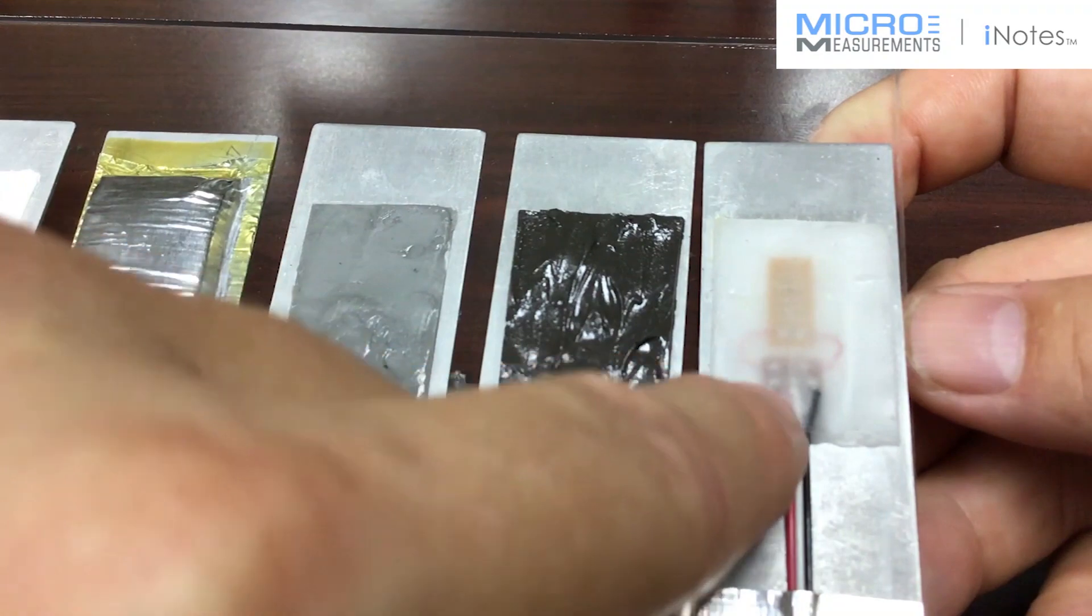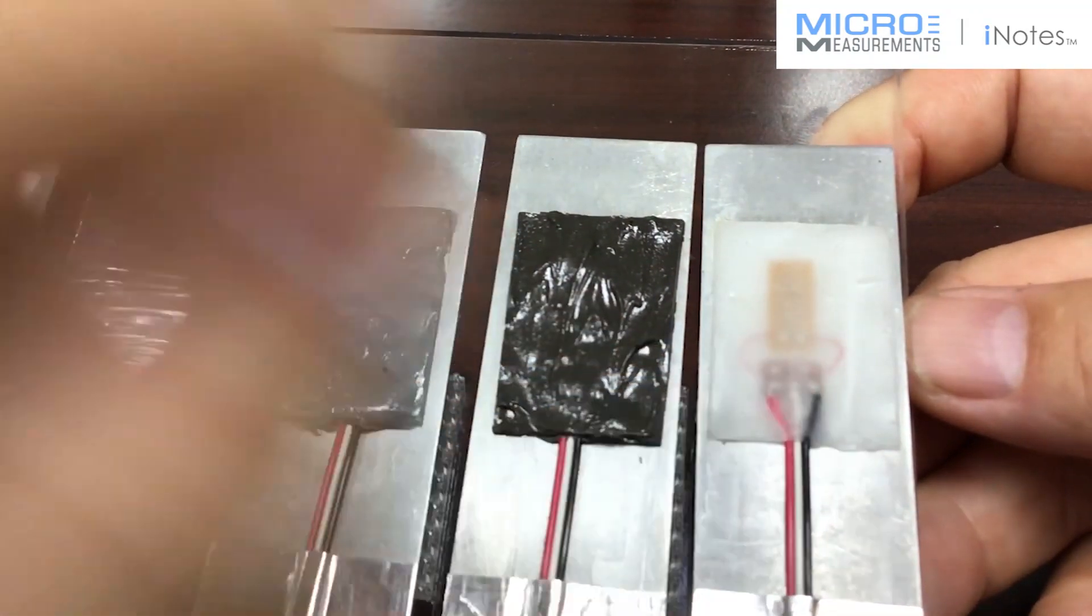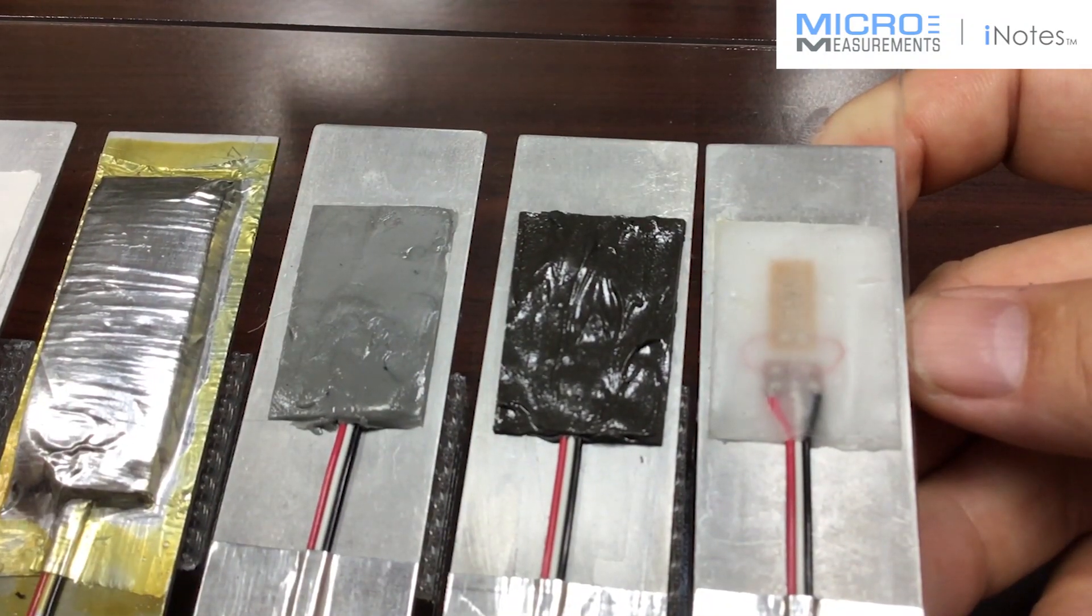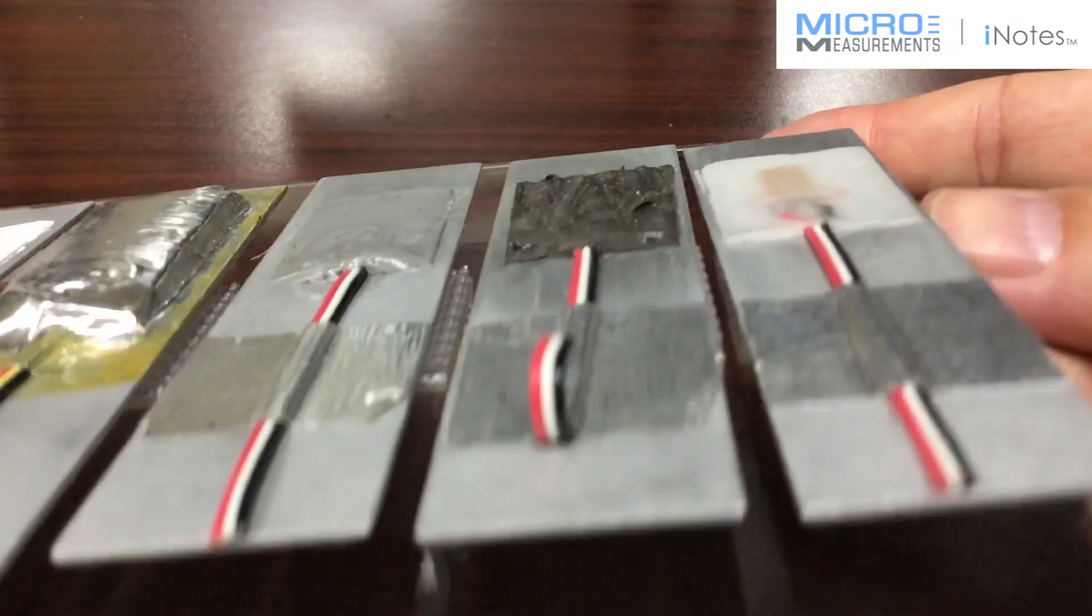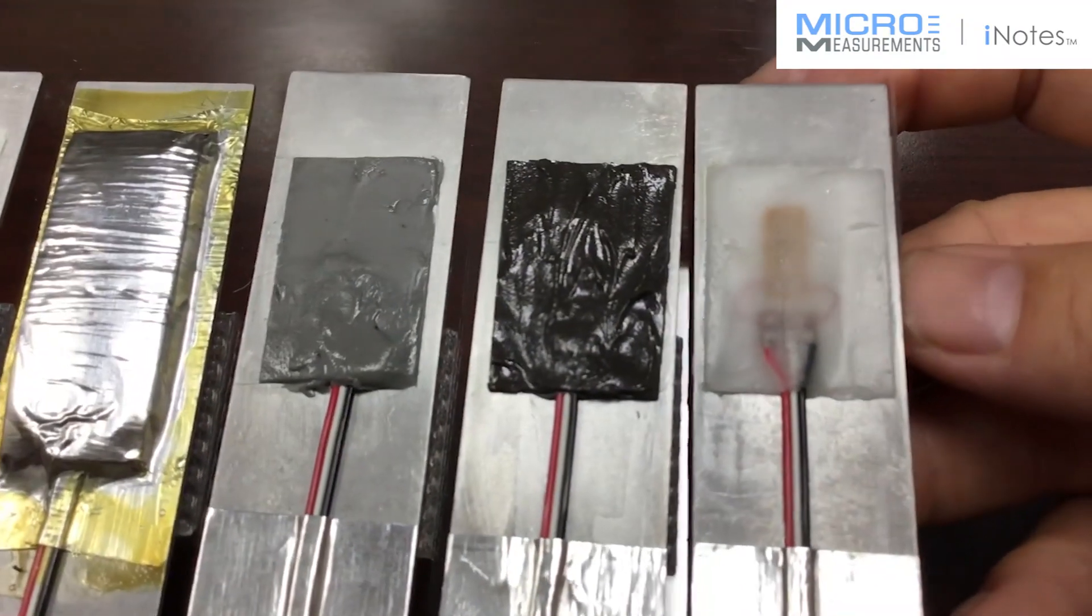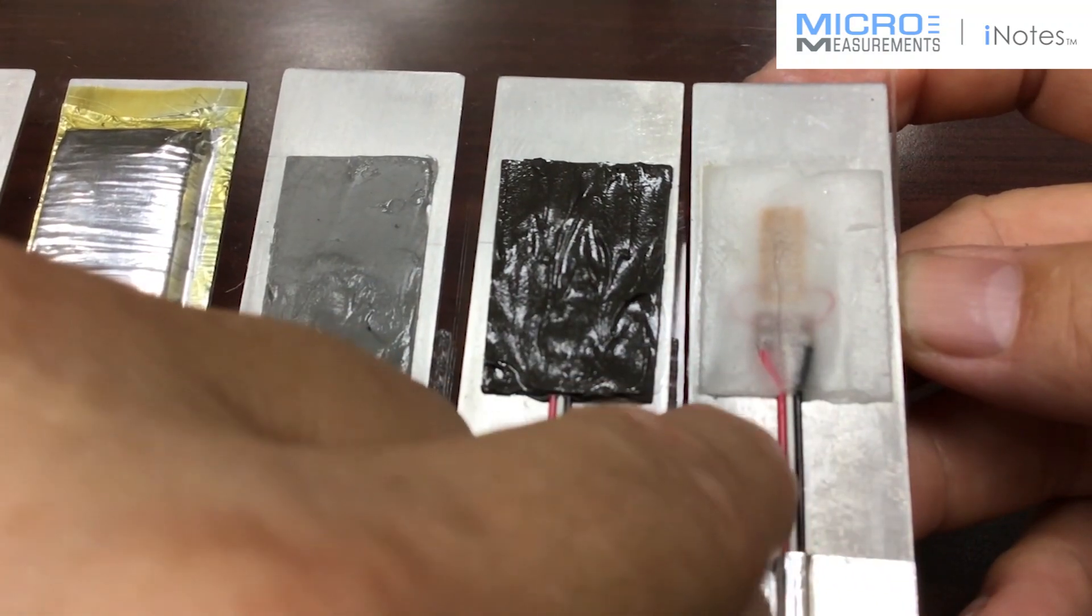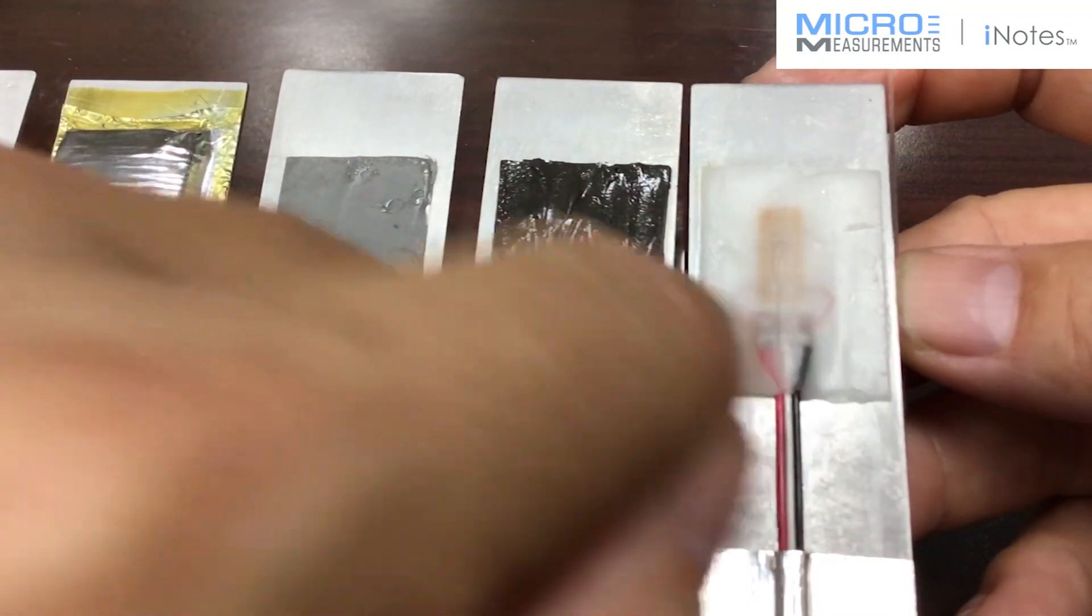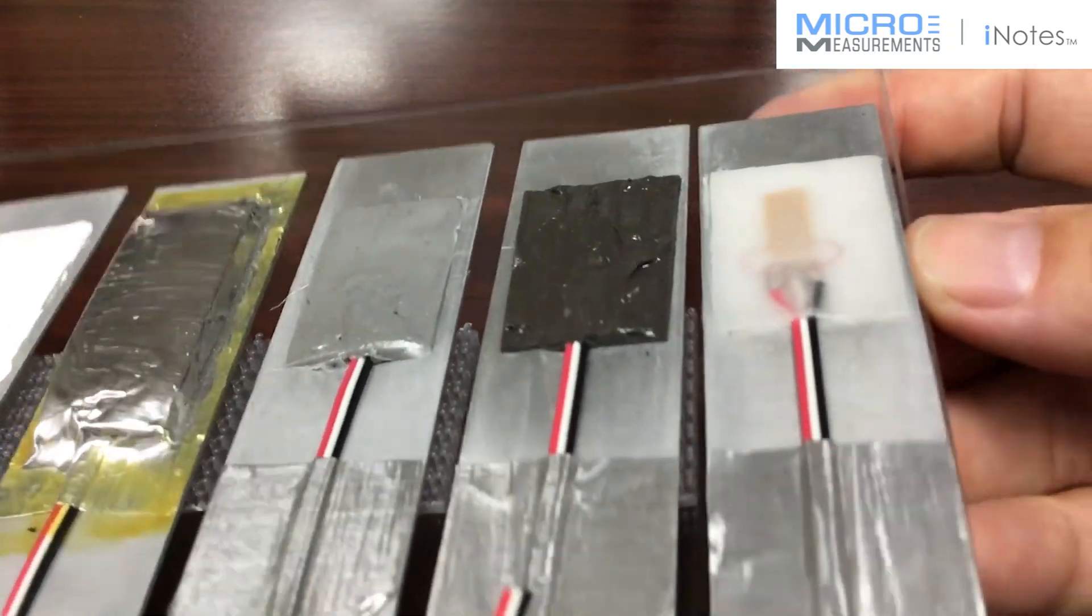This wax as I mentioned is a great moisture barrier but it's not very good mechanically. So a lot of times you do have to put something else over top of it to add additional protection. And also if you look at this one you'll notice how smooth it is on the surface. If you're ever putting wax on over top of strain gauges, you want to make sure you warm the surface of the part before you brush the wax on and that'll help it wet and look nice and smooth like that.